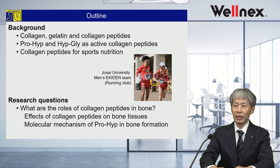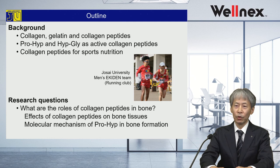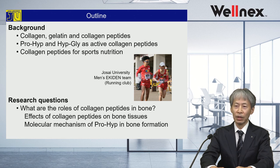I have divided my presentation into three parts. First, I will talk about background of collagen peptide and active collagen G-peptide prolyl hydroxyproline and hydroxyprolyl glycine. Secondly, I want to explain the effect of collagen peptide for sports nutrition. Then, I'd like to focus on the effect of collagen peptide on bone tissues and molecular mechanisms of collagen peptide in osteoblasts.